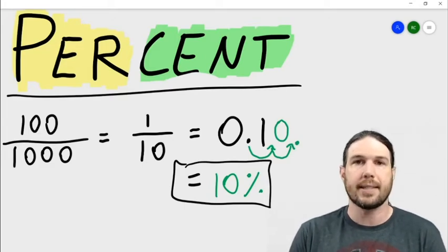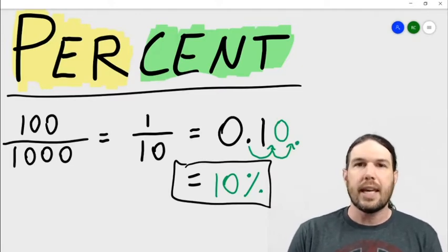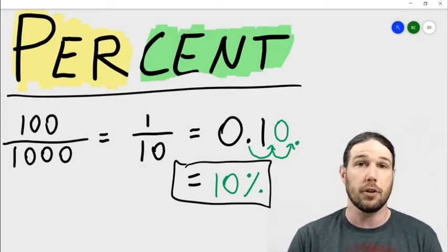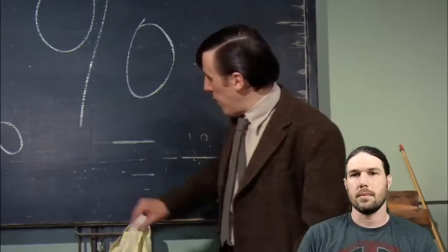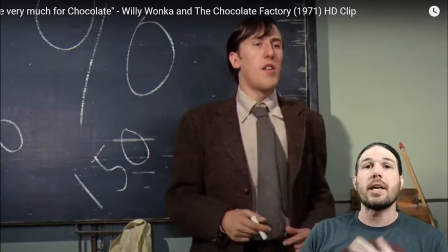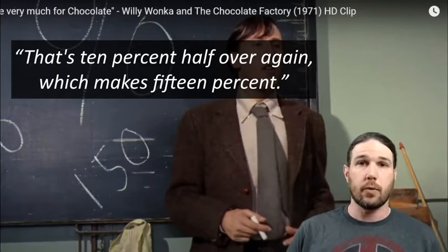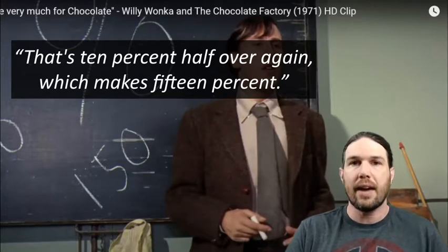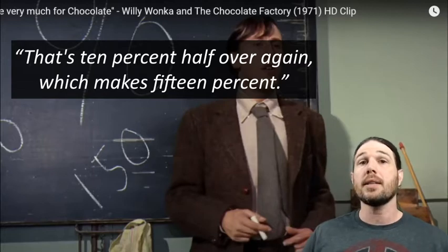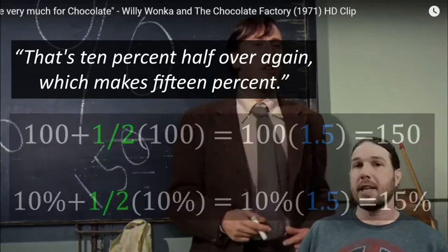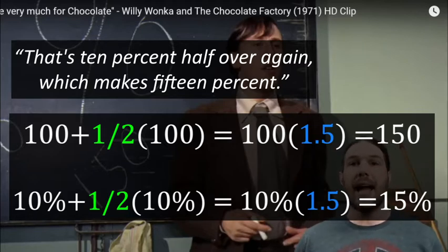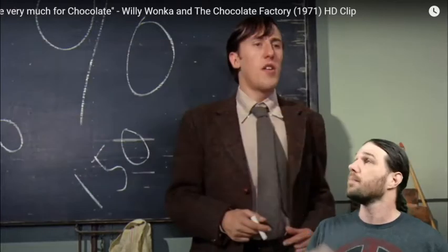While Mr. Turkentine does have correct steps in his head and got the correct answer, he needs to work on his communication skills, because even when I was sixteen or seventeen, let alone ten, I would not have understood that explanation. How many did you open? A hundred and fifty. That's ten percent half over again, which makes fifteen percent. What he's saying is that we already know a hundred bars is ten percent, and since a hundred and fifty is that original hundred plus fifty — half over again — you apply the same proportions to the percentages and get ten percent half over again, which is fifteen percent. A-plus work, Mr. Turkentine.